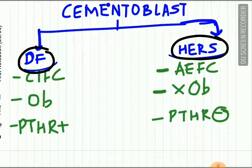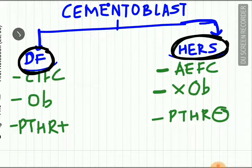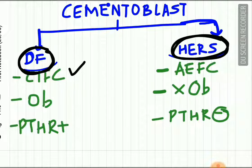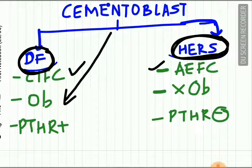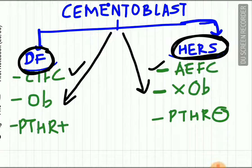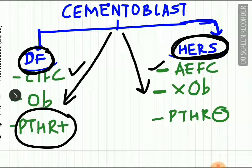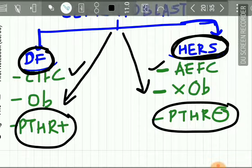Cementoblasts may have two origins: the connective tissue of the dental follicle, and the Hertwig's epithelial root sheath. Cementoblasts derived from the dental follicle mainly give rise to cellular intrinsic fiber cementum (CIFC), while those derived from Hertwig's epithelial root sheath give rise to acellular extrinsic fiber cementum. Dental follicle-derived cementoblasts resemble osteoblasts and have parathormone receptors, while those from the root sheath do not resemble osteoblasts and lack parathormone receptors.